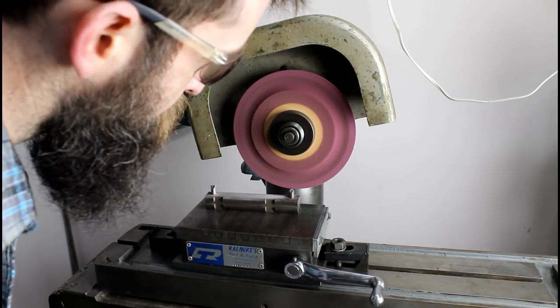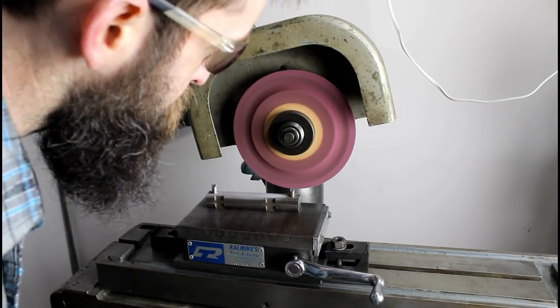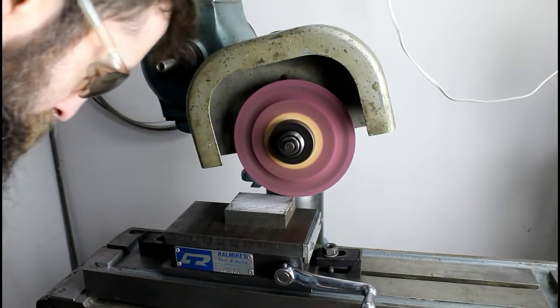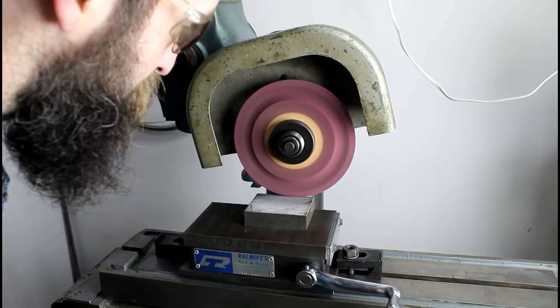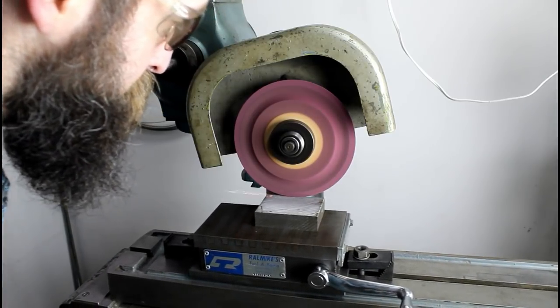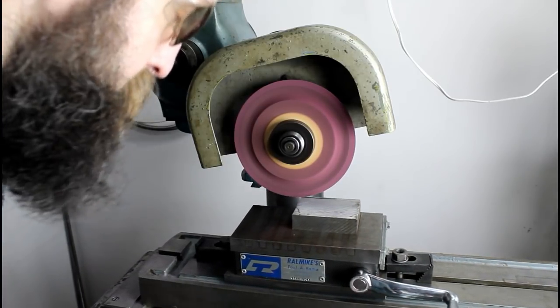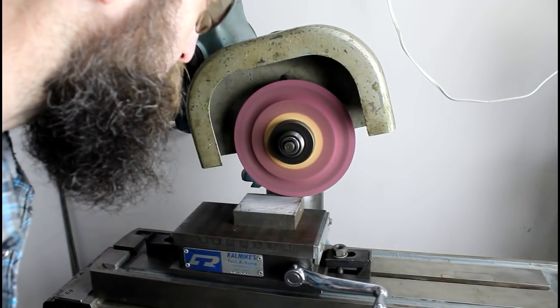First we're going to dress it. This is a little, I don't know what this is actually, but it's got a diamond nib on it and I want to dress this wheel up. So I'm just going to by hand bring this down, try to get directly under the center of the wheel.